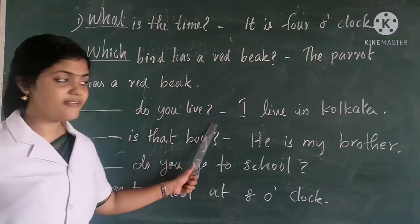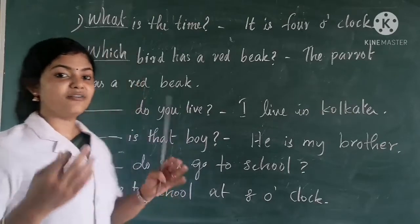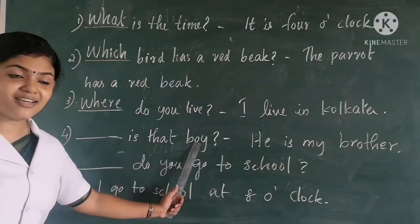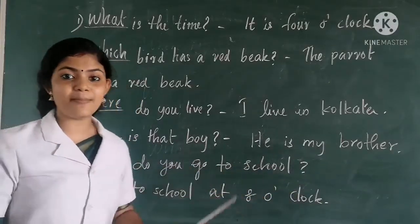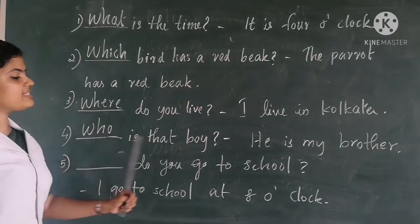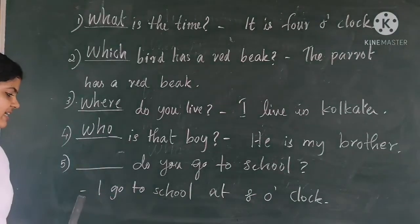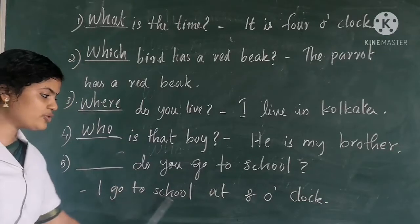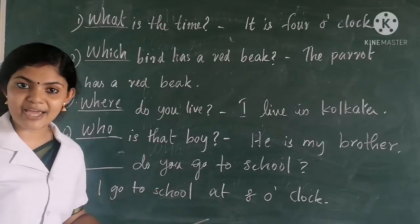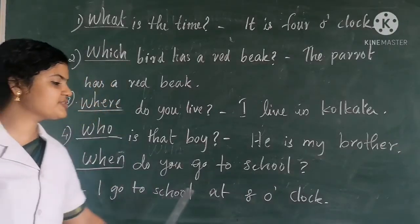Next: Dash do you live? Answer — I live in Kolkata. It is a place, so we use WHERE. Where do you live? I live in Kolkata. Next: Dash is that boy? Answer — he is my brother. We are asking about a person, so we use WHO. Who is that boy? He is my brother. Next: Dash do you go to school? Answer — I go to school at 8 o'clock. It is the time of the action, so we use WHEN. When do you go to school? I go to school at 8 o'clock.